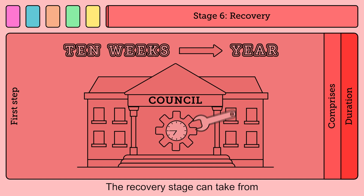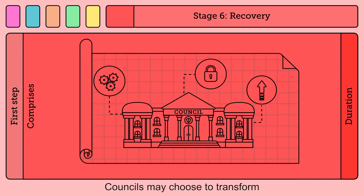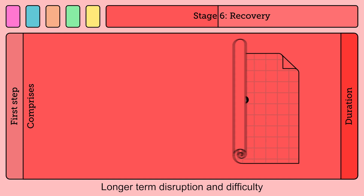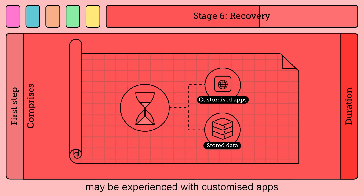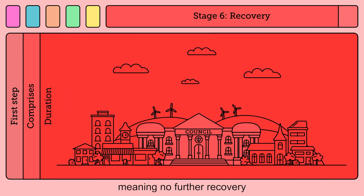Recovery. The recovery stage can take from between 10 weeks to a year or more. Councils may choose to transform rather than reinstate their previous systems, which will take time to plan and implement. Longer-term disruption and difficulty may be experienced with customized apps and those which store data. This stage ends when the Council reaches their new normal, meaning no further recovery can be reasonably achieved.